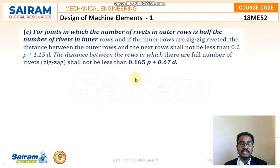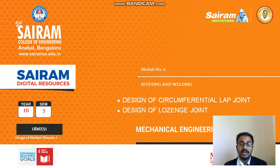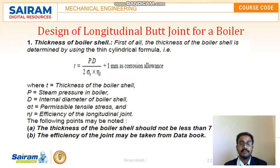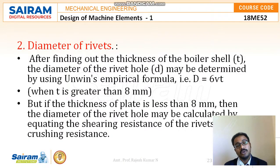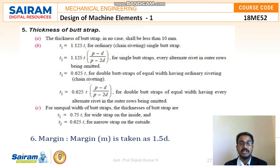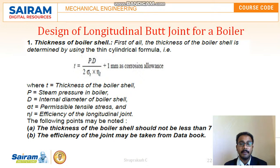To conclude, these 5 to 6 design steps are what we need to keep in mind when designing the longitudinal butt joint. Just remember these steps: thickness of the boiler shell, diameter of the rivets, pitch of the rivets, distance between rows of rivets, thickness of the butt strap, and the margin. These are the key steps for the design of the longitudinal butt joint for your boiler. Thank you.